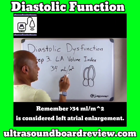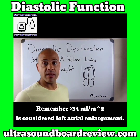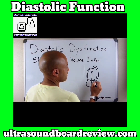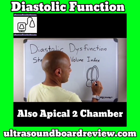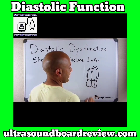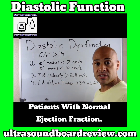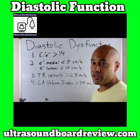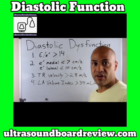Anything above 34 milliliters per square meter is considered abnormal. This measurement is based on the patient's weight, and you get it when you trace the left atrium in the apical four chamber along with the length going perpendicular to the mitral annulus plane. If your patient has more than 50% of the positive criteria, they are considered positive. If the patient has exactly 50%, it's considered indeterminate, and if they have less than 50%, it's considered normal diastolic function.